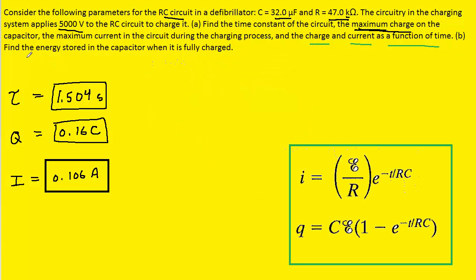And finally, to part B, which wants us to find the energy stored in the capacitor when it is fully charged. Now, there are a few equations that we could use. But one of the equations tells us that the energy stored in the capacitor is equal to its charge squared divided by 2 times the capacitance.